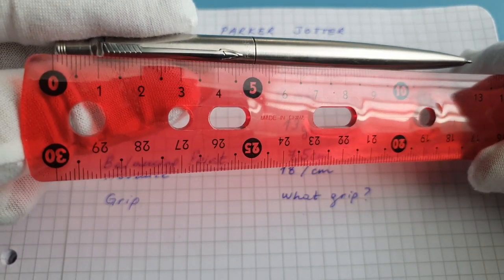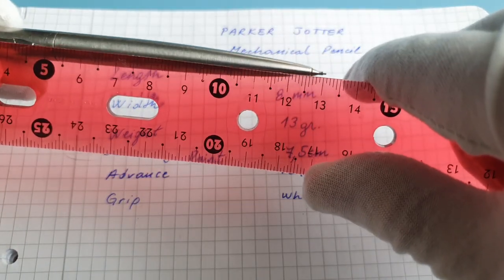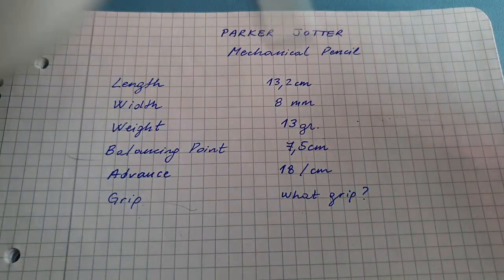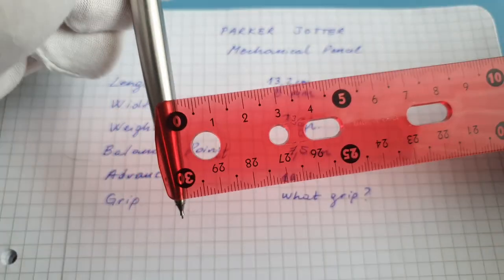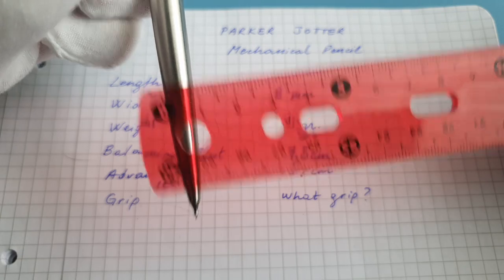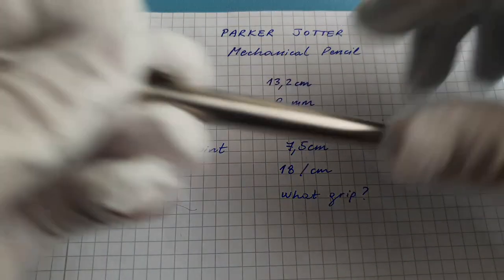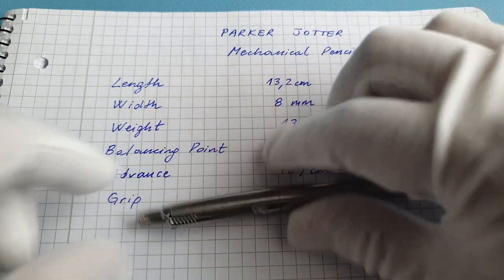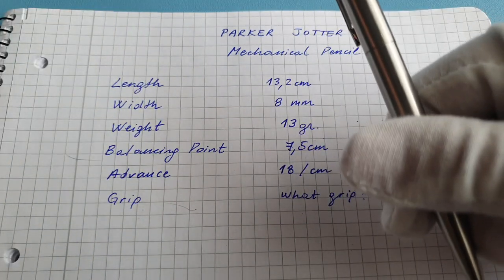As you can see, let's start with the length. We have a length of 13.2 centimeters, then we have a width around here on the grip area of 8 millimeters, and the weight of this thing is 13 grams, so it's really light.